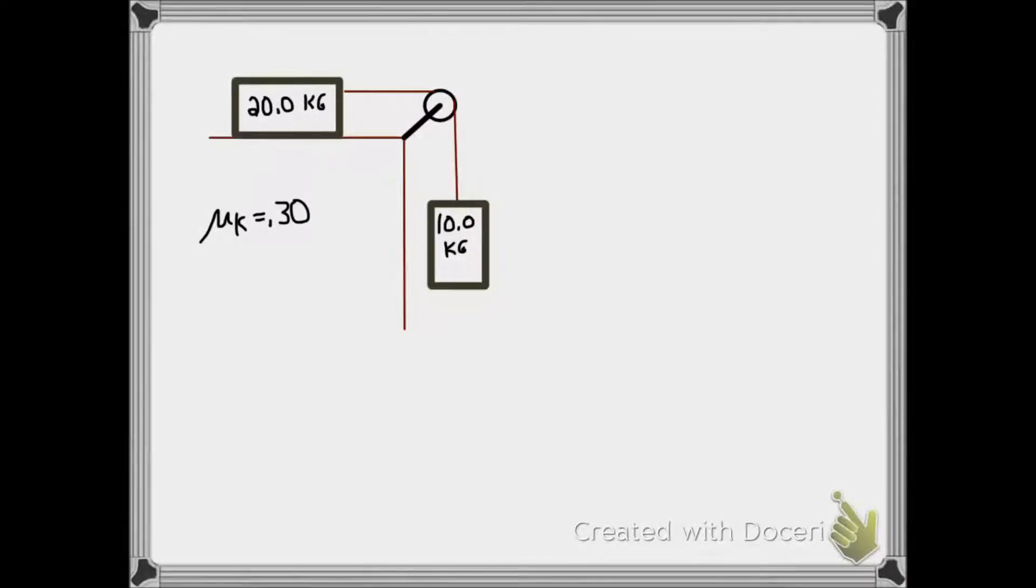In a classic friction problem, we have a 20 kilogram block on a rough wooden surface attached by string to a 10 kilogram block hanging over a pulley.